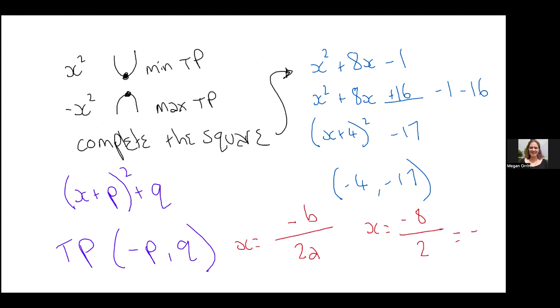Which is negative 4. And then if I want the Y coordinate, I just substitute it back in here and you would get negative 17. This is 16 minus 32 minus 1, which is negative 17. So that works, right? So both of these versions work, but that is why we've been practicing completing the square.